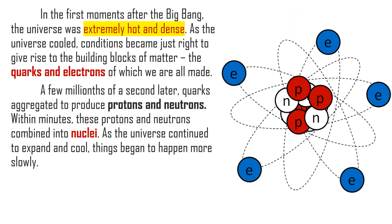Before the Big Bang incident, the universe was actually extremely hot and dense. At the same time, it is single. But after the Big Bang, the pieces from it produced from that incident are moving away from each other, which is the reason why they are becoming cool. As the universe cooled, conditions became just right to give rise to the building blocks of matter, which are what we call the quarks and electrons. A few millions of a second later, after the quarks and electrons were produced, these quarks aggregated to produce protons, which are positive charges, and neutrons, which are neutral charges. Within minutes, these protons and neutrons combined into nuclei, and as the universe continued to expand and cool, things began to happen more slowly.